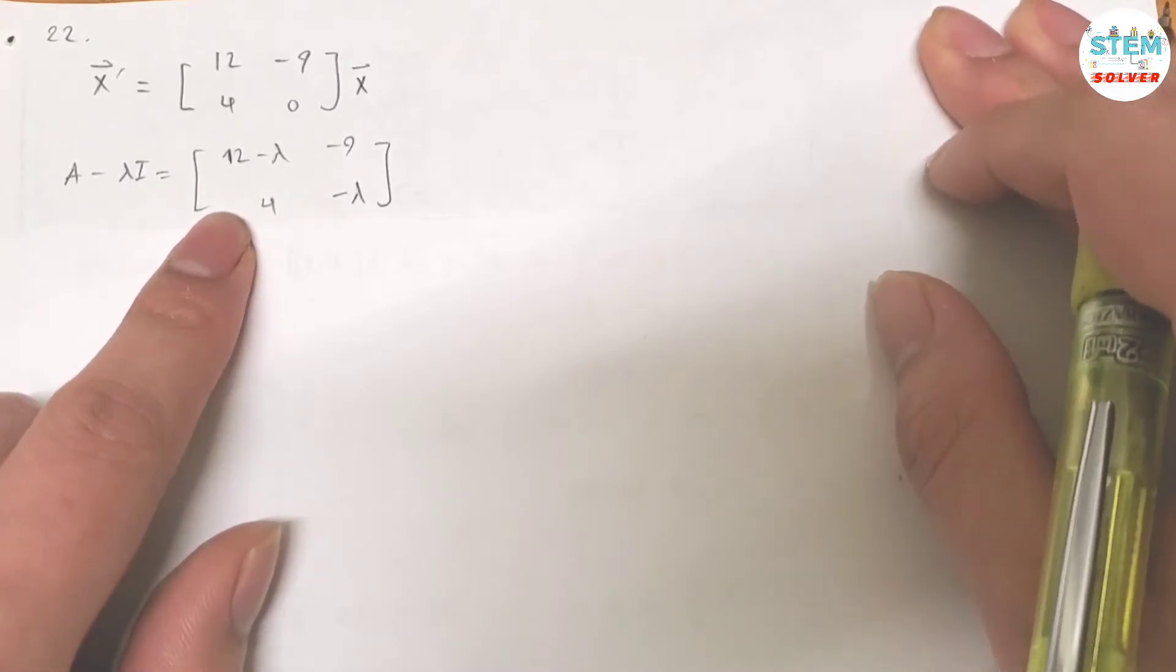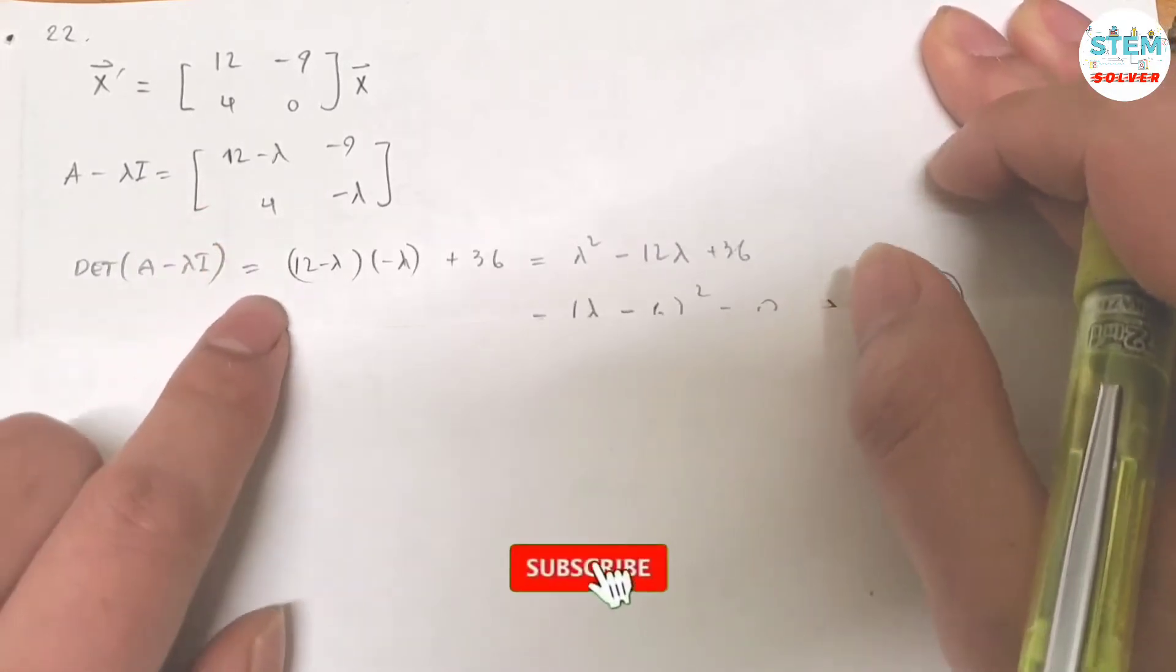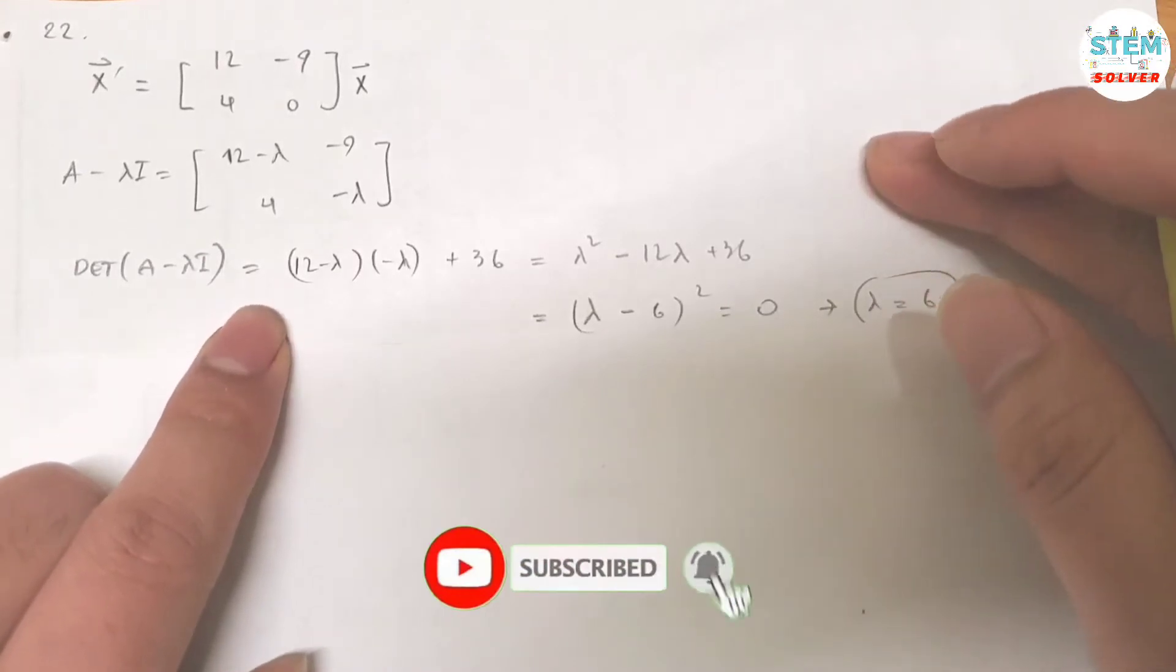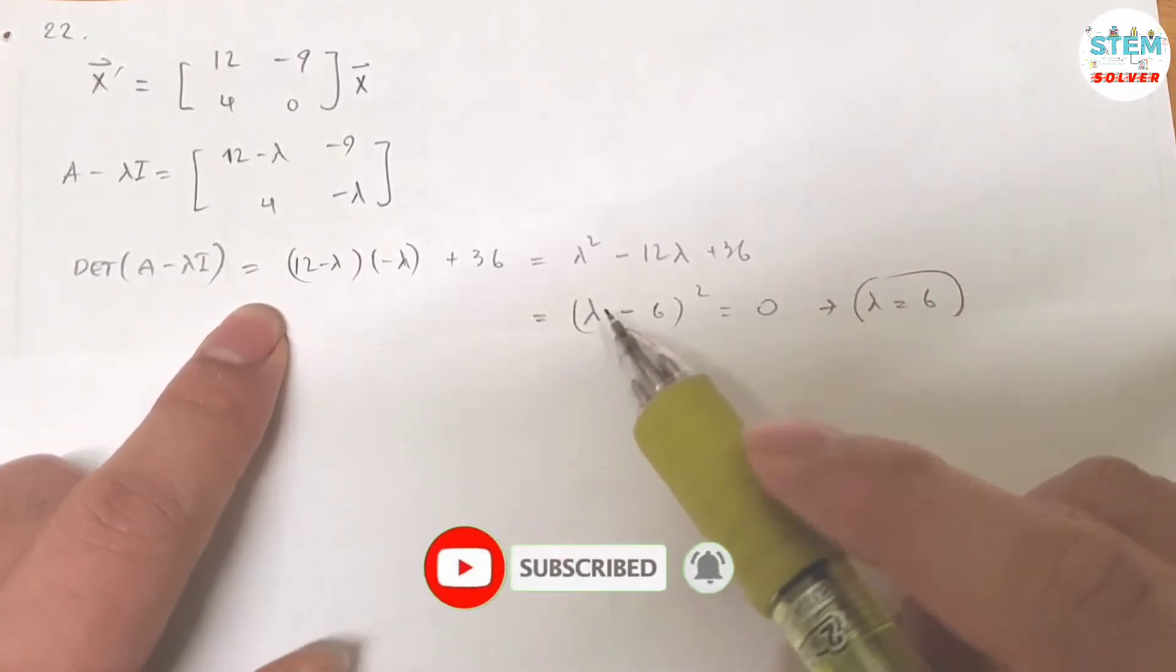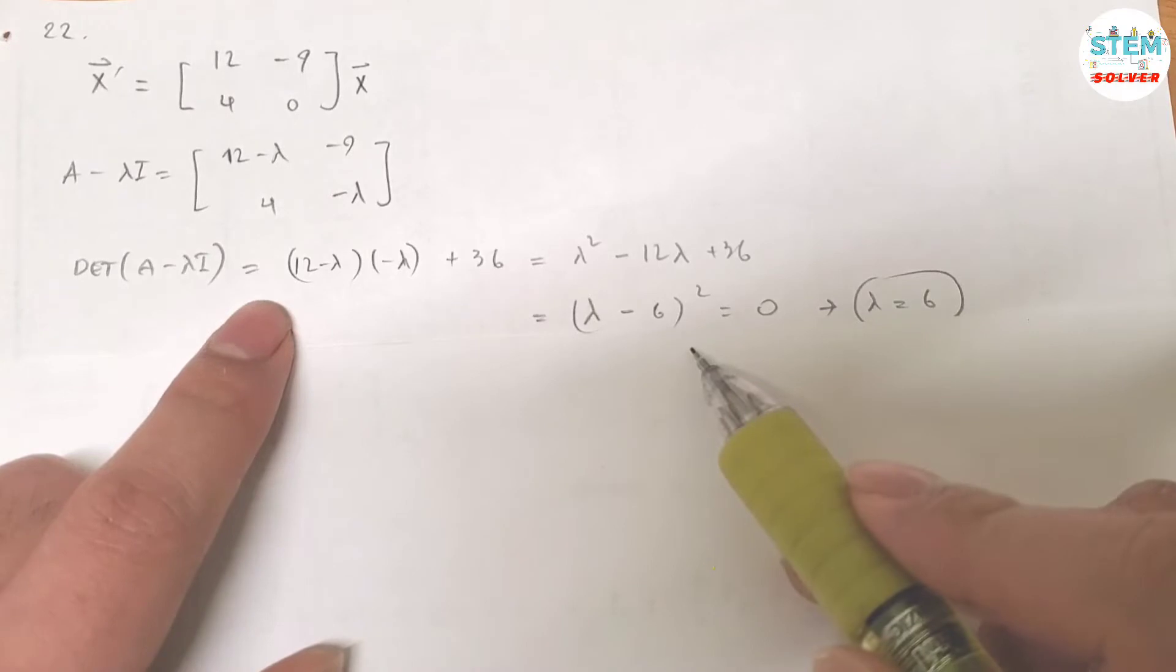Then you are going to find its determinant. After you find its determinant, set it equal to 0 and then solve for lambda.